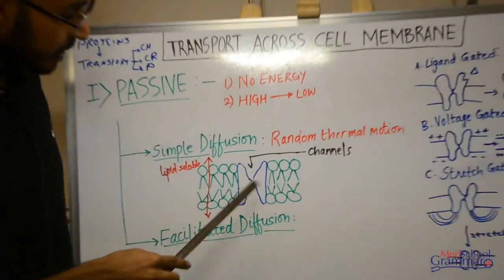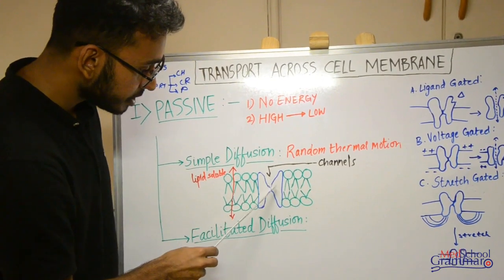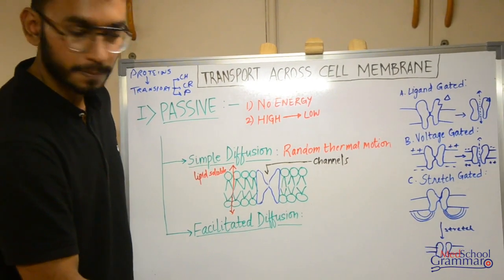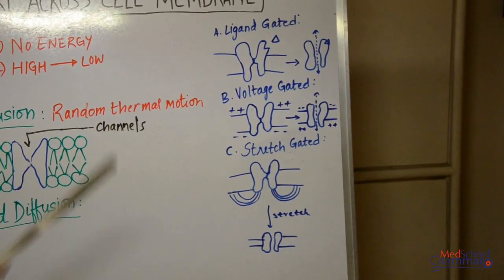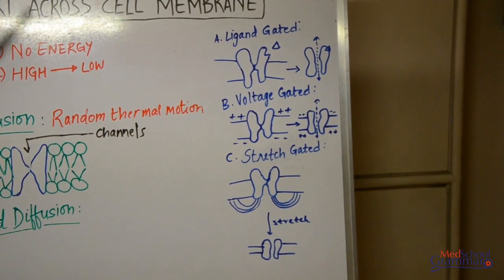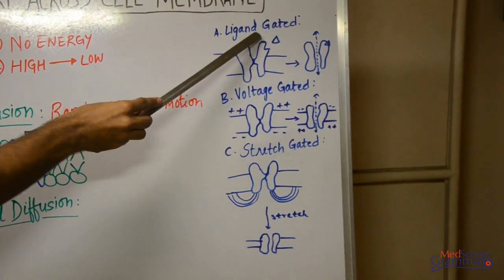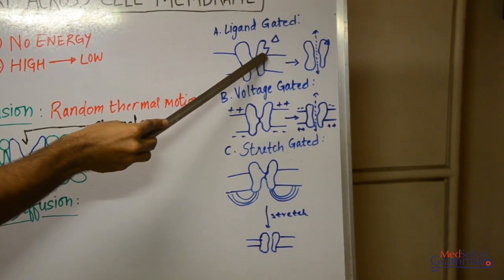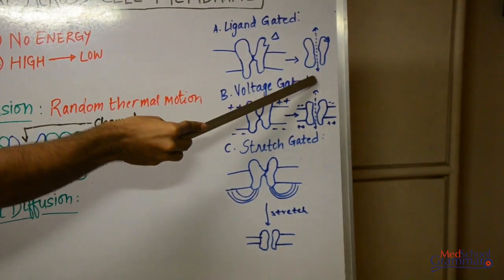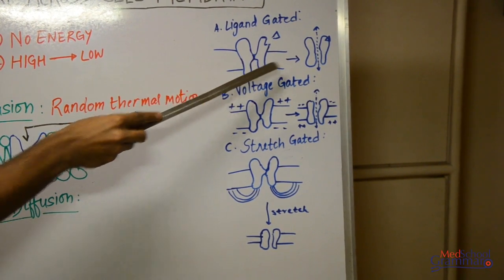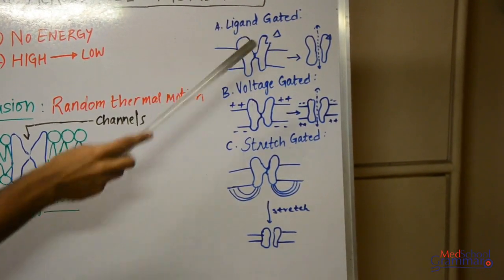Based on gating, channels are of three types: ligand-gated, voltage-gated, and stretch-gated. A ligand can be any extracellular or intracellular substance — say a hormone extracellularly, or intracellularly a second messenger like cAMP. The ligand has a receptor site on the channel; when it binds to the receptor site, it causes conformational changes that open the channel and allow the substance to pass. The substance passes on its own — the protein does not carry it — therefore it is a channel. This is a ligand-gated channel.